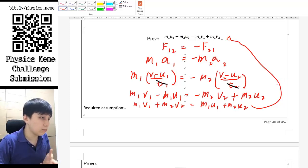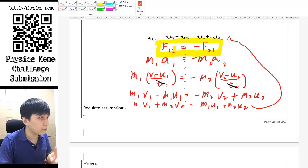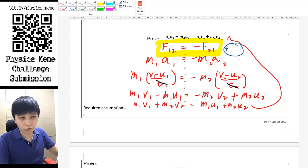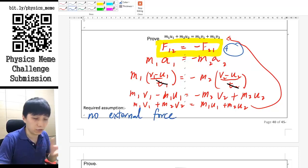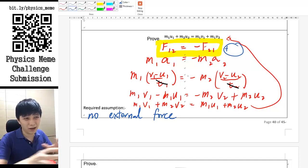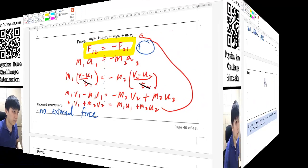For the assumption, think about what you are based on for this derived work, which is of course Newton's third law. At the same time, because there's no other force here - if you have another force, then the whole derived work would collapse. So the assumption is actually that there's no external force adding on these two objects. The force that we are talking about here is an internal force, so any other external force would basically kind of violate this whole relationship.